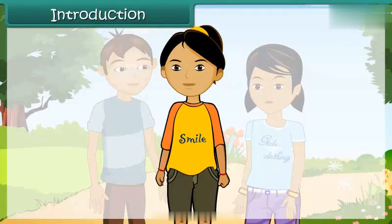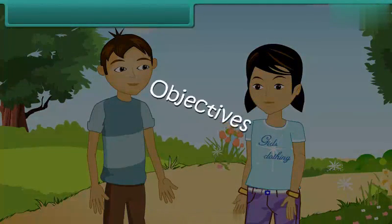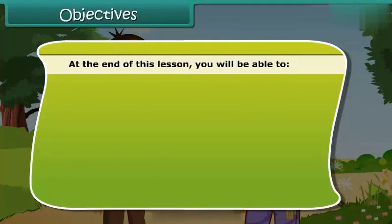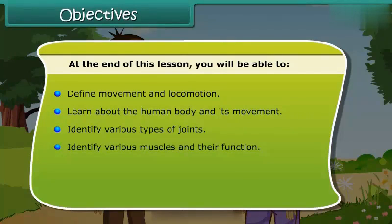Children, in this lesson we will learn about body movement and the difference between movement and locomotion. At the end of this lesson you will be able to define movement and locomotion, learn about the human body and its movement, identify various types of joints, and identify various muscles and their functions.